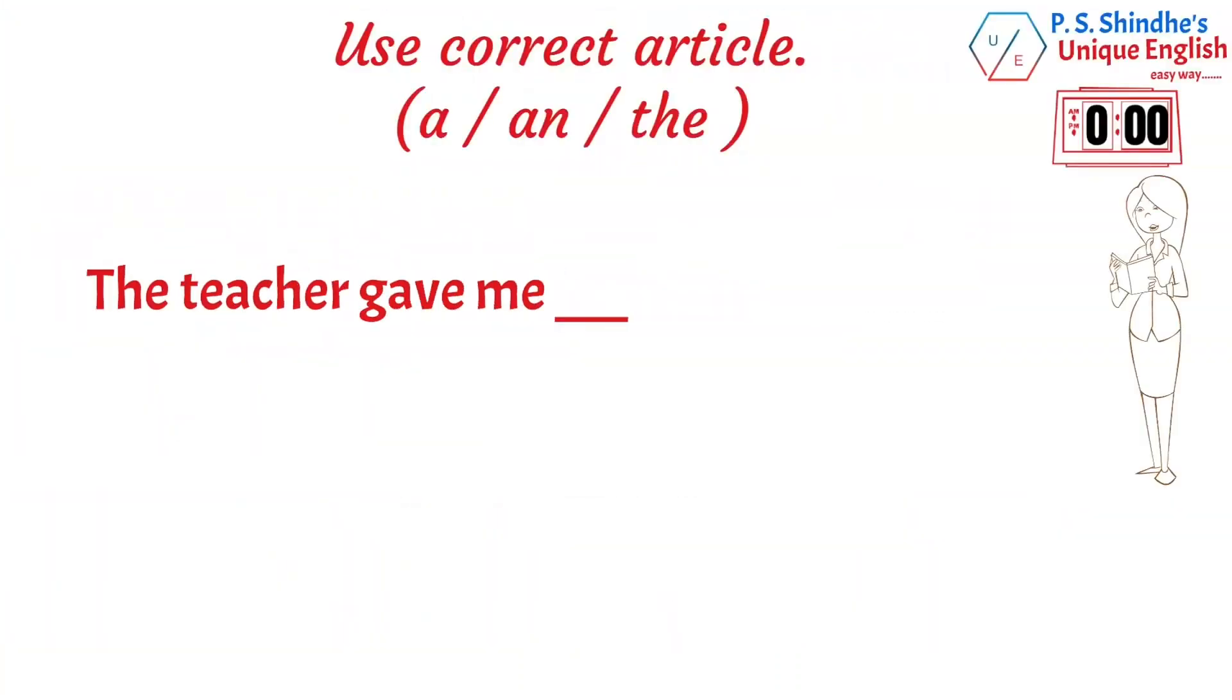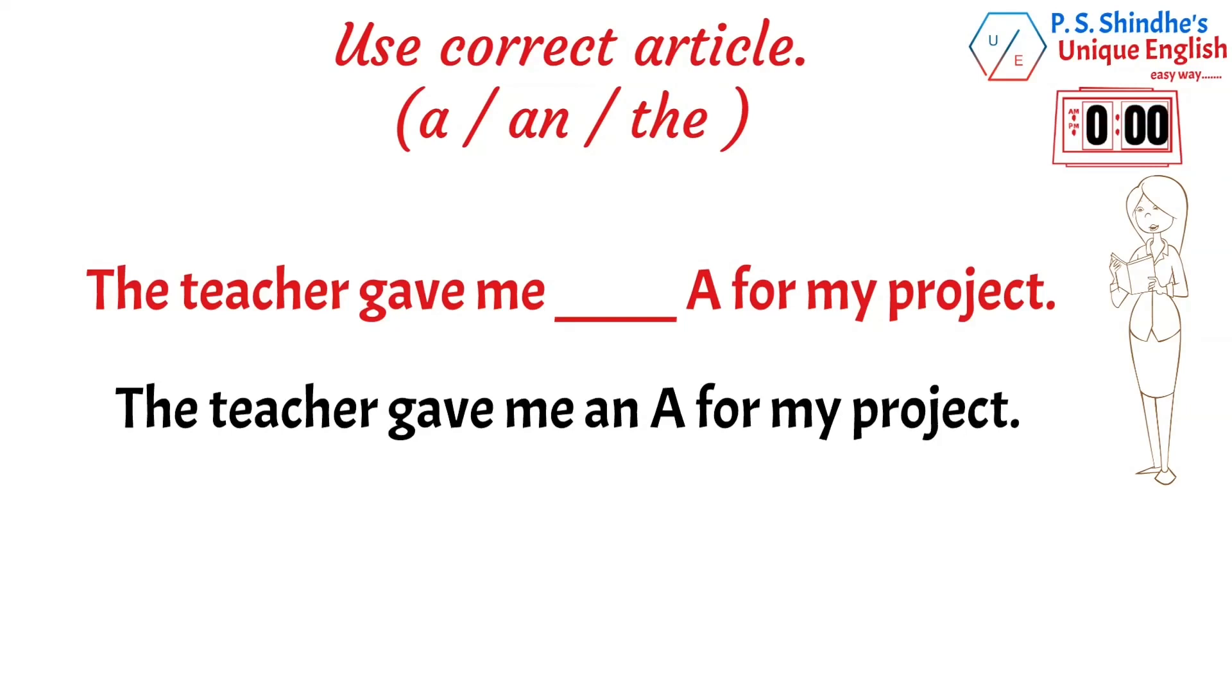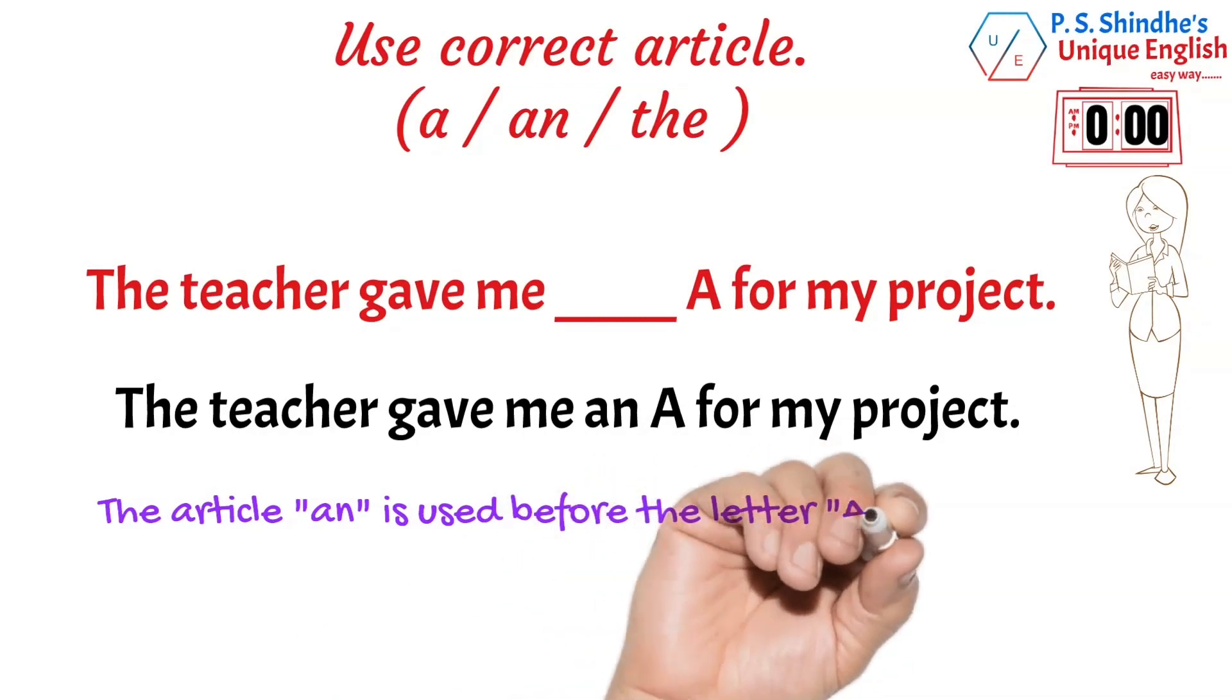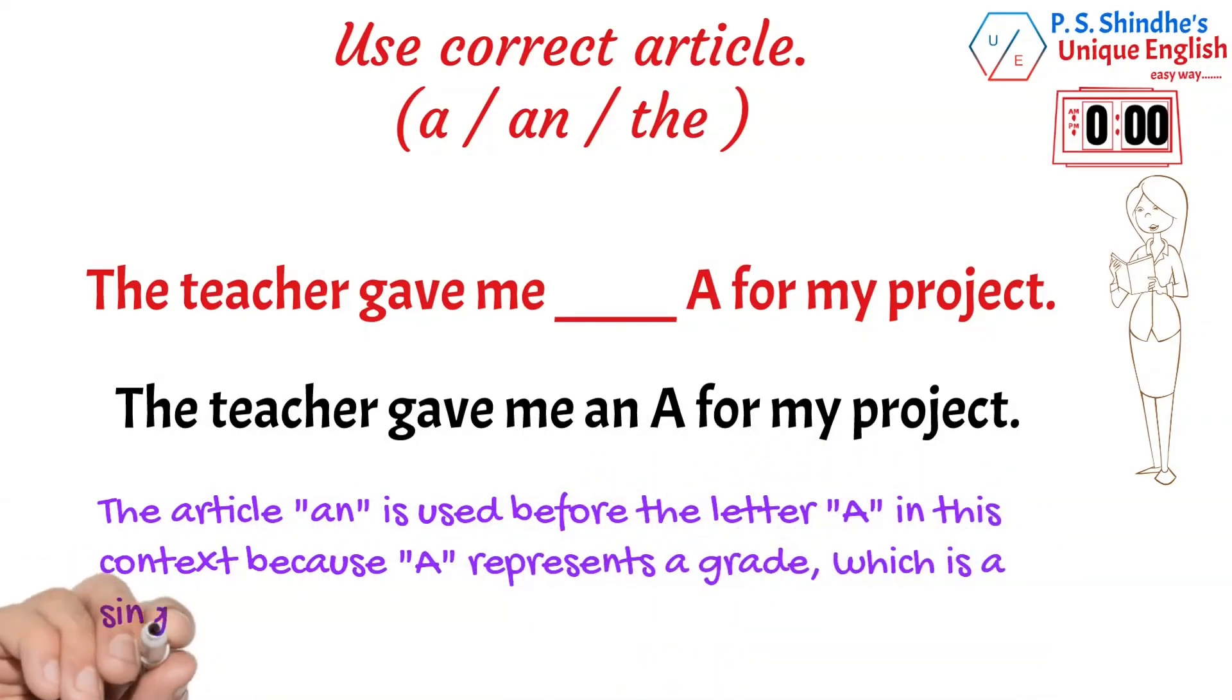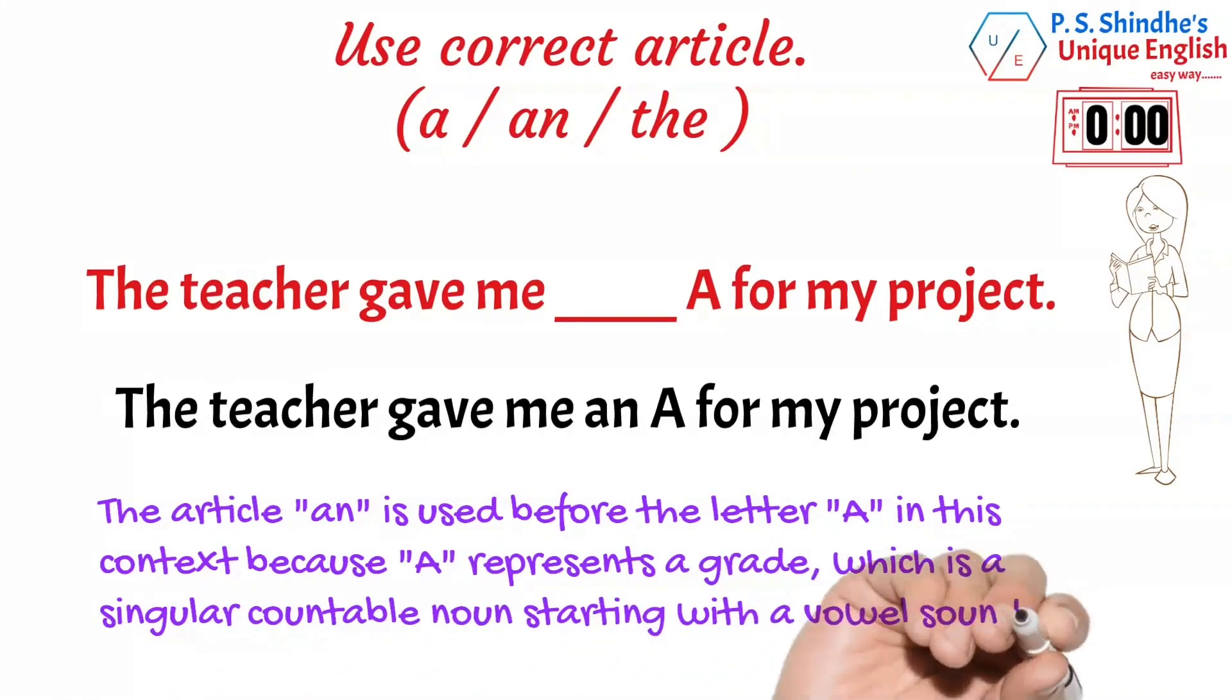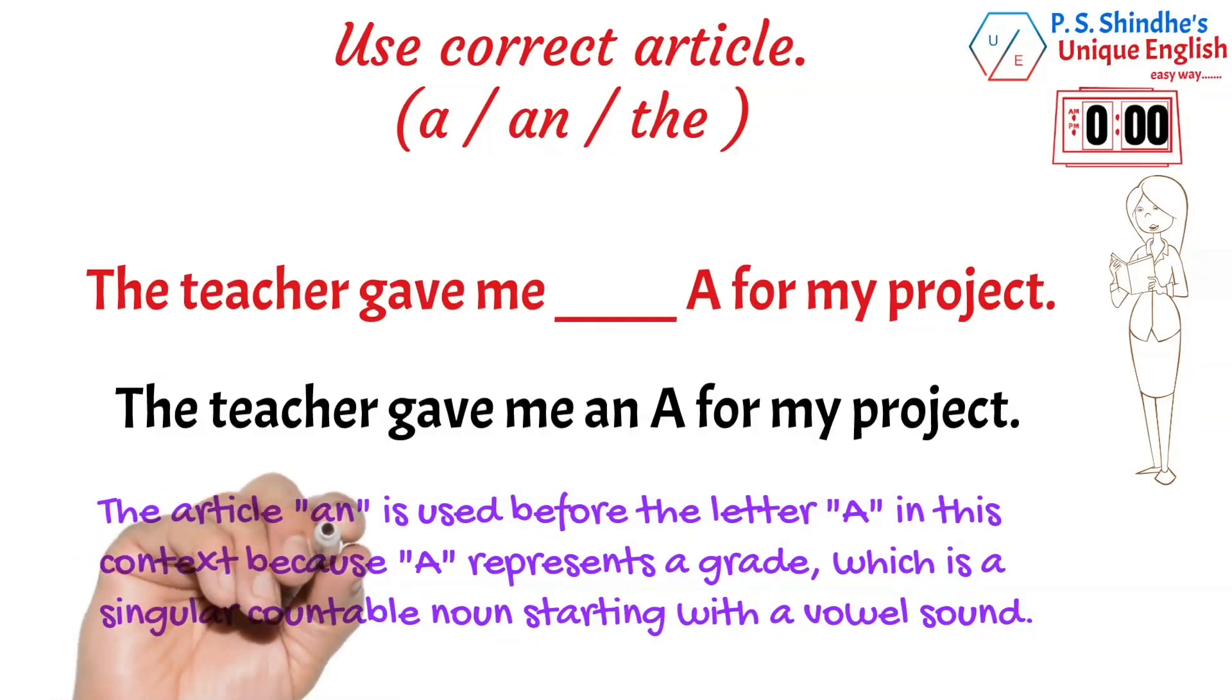The teacher gave me blank A for my project. The article an is used before the letter A in this context because A represents a grade, which is a singular countable noun starting with a vowel sound. The use of the indefinite article an is therefore appropriate to indicate that the grade received by the speaker is a particular grade among many possible grades. Without the indefinite article, the sentence would be incomplete and unclear, as the listener would not know what kind of A the speaker is referring to.